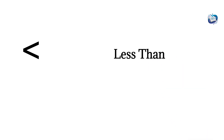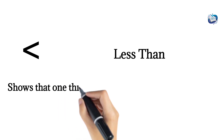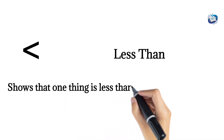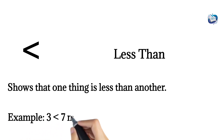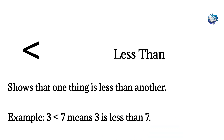Less than. Shows that one thing is less than another. Example: 3 < 7 means three is less than seven.